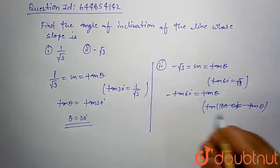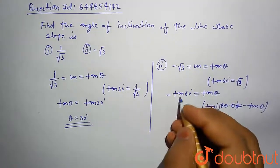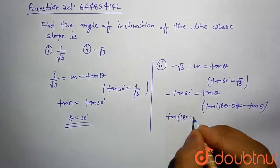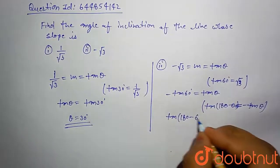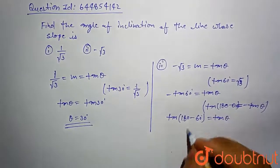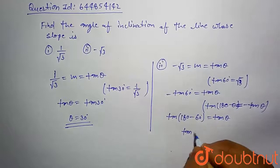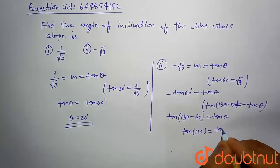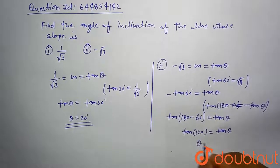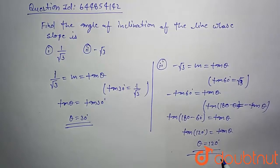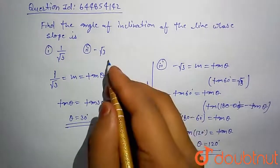So -tan θ is written as tan(180° - 60°) equals tan θ. This comes out to tan 120 degrees equals tan θ, so θ comes out to 120 degrees. This is the angle of inclination for the second case.